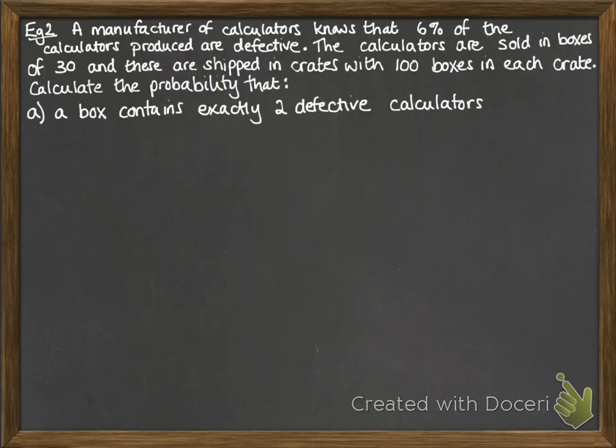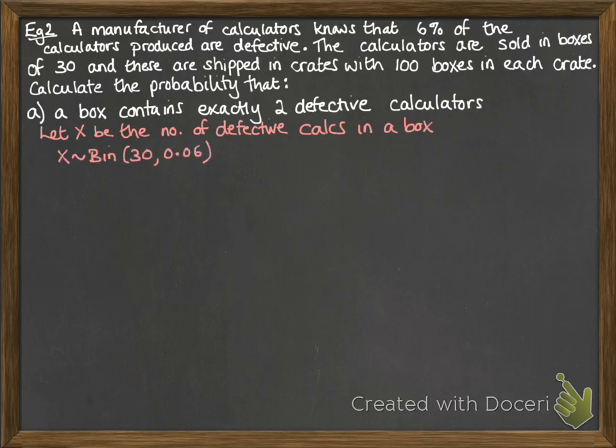Right, we'll apply this to a context question now. So a manufacturer of calculators knows that six percent of the calculators produced are defective. The calculators are sold in boxes of 30 and they're shipped in crates with 100 boxes in each crate. We want the probability, so first of all, that a box contains exactly two defective calculators. So we're just talking about the 30 in the box now. We need to set out what our variable is first. So x is the number of defective calculators in a box. It's going to follow a binomial distribution with 30 trials and probability of success is 0.06 to give us the six percent, and we want the probability that x equals two. So do your normal binomial calculation here. Hopefully you can remember it and there's our probability.